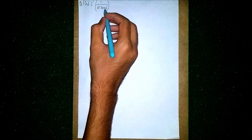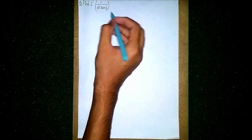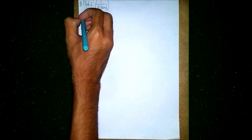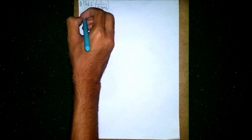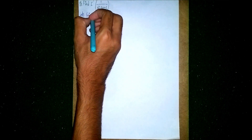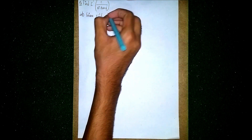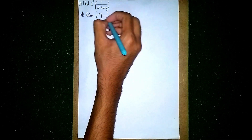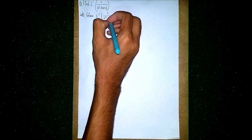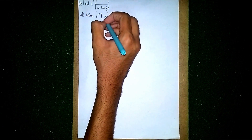Hello everyone and welcome back to my channel. It's question 5: Laplace inverse of 1 by s-squared minus 5s plus 6. This is a Laplace inverse transformation question, so for a straight solution — what is given? Given: Laplace inverse of 1 by s-squared minus 5s plus 6.